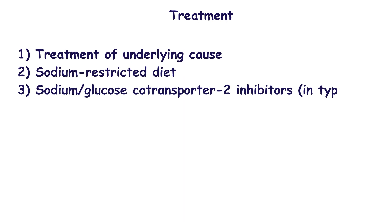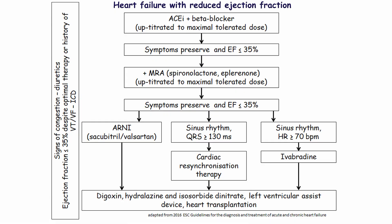Correction of the underlying disease plays the key role in treatment. Sodium restriction diet is recommended. In patients with type 2 diabetes mellitus, sodium-glucose cotransporter-2 inhibitors can prevent or delay the onset of heart failure. Treatment of patients with heart failure with reduced ejection fraction starts with an ACE inhibitor or beta blocker. If the patient is intolerant to ACE inhibitors, angiotensin receptor blockers are used, but combination of these agents should be avoided. Carvedilol is preferred in the case of reduced ejection fraction, starting with minimal dose and uptitrated to maximum tolerated dose. If ejection fraction remains lower than 35%, a mineralocorticoid receptor antagonist should be added. If ejection fraction is still lower than 35%, the combination of neprilysin inhibitor and angiotensin receptor blocker — sacubitril/valsartan — should be used.